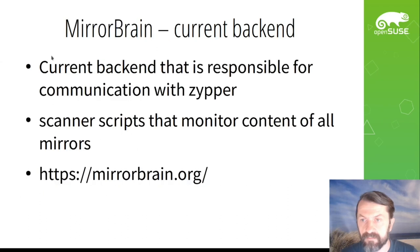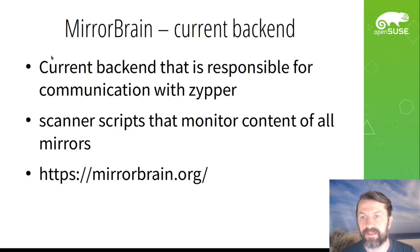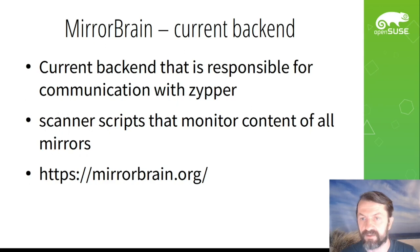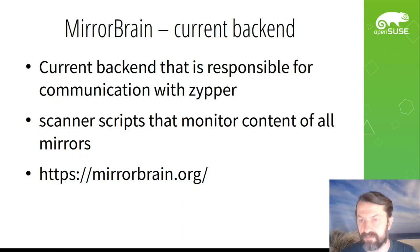Here comes MirrorBrain. It is the current backend behind download.opensuse.org that is responsible for communication with zypper. It is basically an Apache module that communicates with a database, and it also has a scanner script that goes over all the mirrors and registers updates in the database — this is the discovery process mentioned earlier.